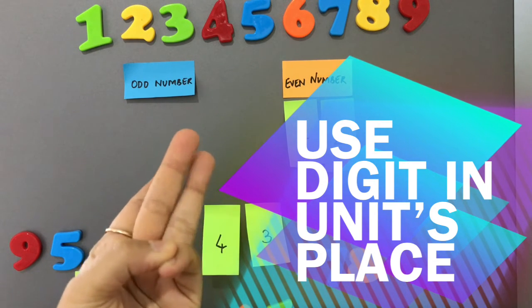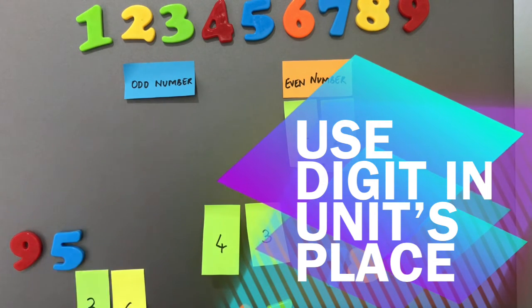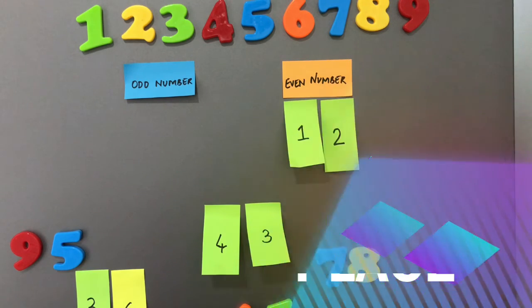Three fingers out. Form your pairs. One finger left alone. So forty three becomes an odd.